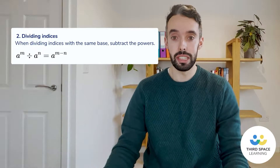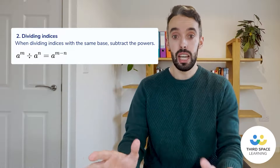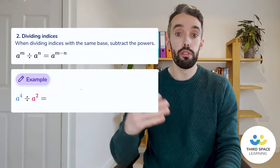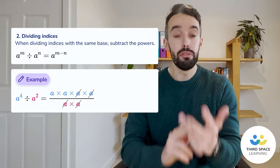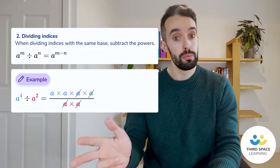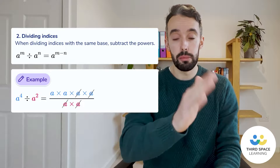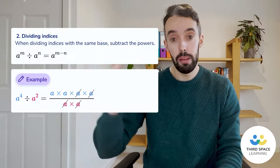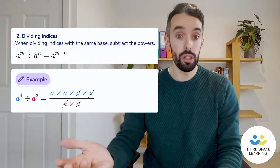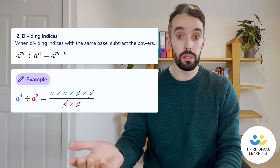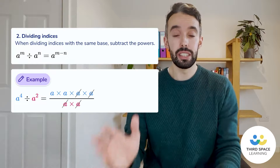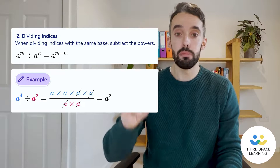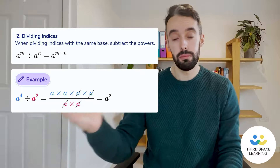Let's take a look at the second law of indices. This is where we are dividing terms — we subtract those powers. For example, if we had A to the power of four — that's A times A times A times A — and we divide that by A to the power of two, on the numerator we'd have A times A times A times A. We can divide A by A to get one, and do that again. So what we're left with is just A times A, which is A squared. We've subtracted the powers: four subtract two gives A to the power of two.